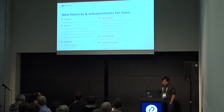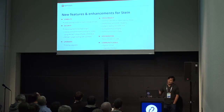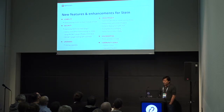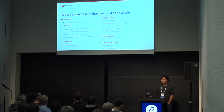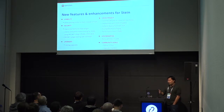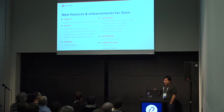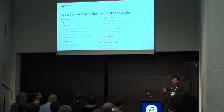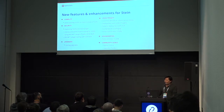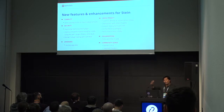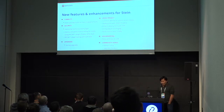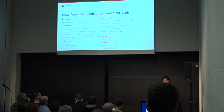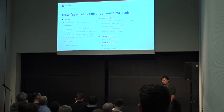There will be some testing against the soft HSM with PKCS 11 by the end of Stein. Rolling upgrades — we hope to finish that off this cycle. On the cross-project side, Castellan has landed; it's part of Oslo and is basically just an interface for applications to store and retrieve secrets. The idea was that we didn't necessarily want to require people to have Barbican, so we provided a generic interface.